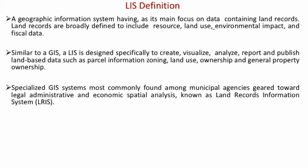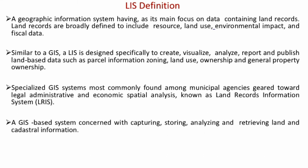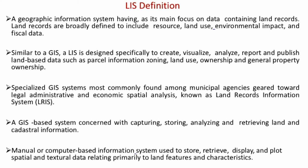Land-related data includes parcel information, zoning, land use, ownership, and general property details. LIS is a specialized GIS system most commonly found among municipal agencies, geared toward legal, administrative, and economic spatial analysis — also known as a land record information system. It is a GIS-based system concerned with capturing, storing, analyzing, and retrieving land characteristics information.